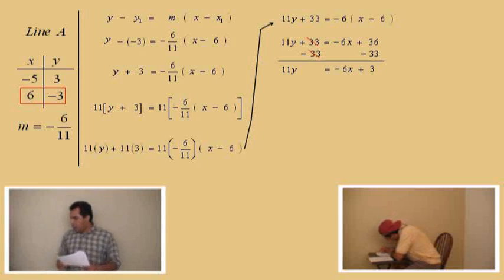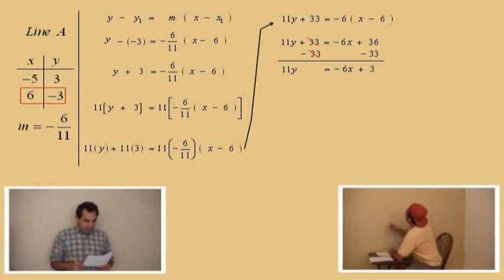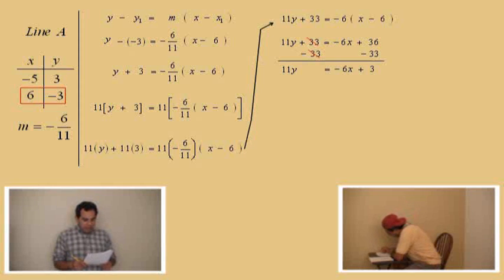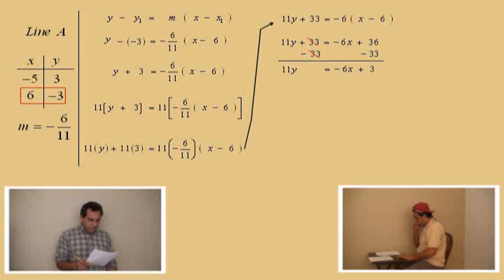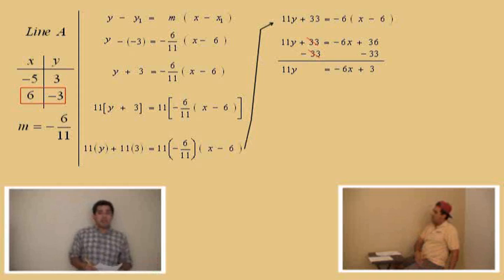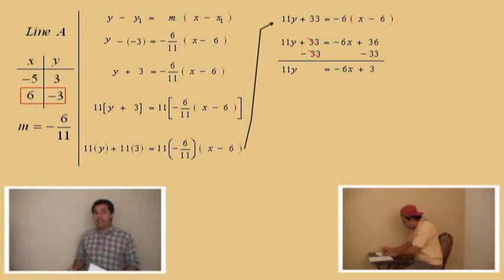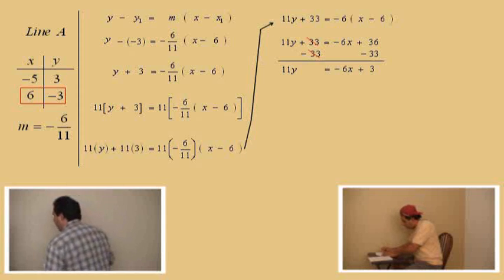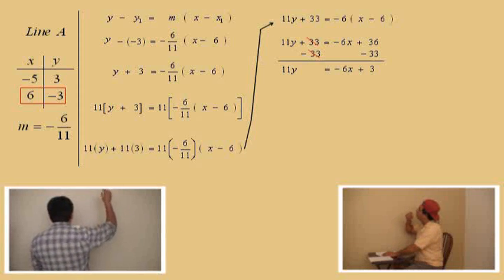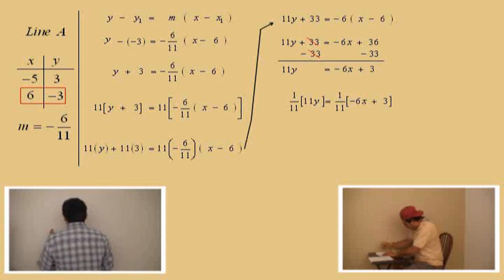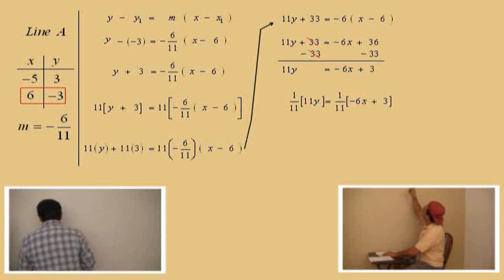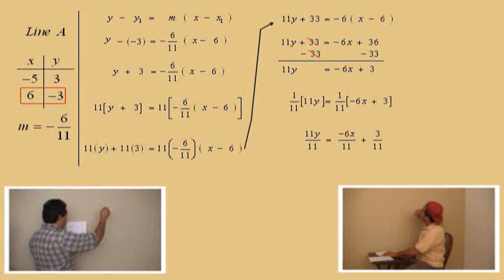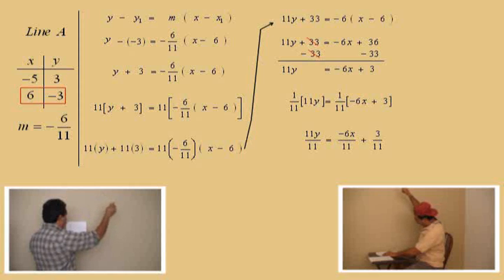Now, Charlie, here we have eleven y equals negative six x plus three. We're solving for y, so what do we have to do to both sides? Divide by eleven. Divide both sides by eleven. Dividing both sides by eleven is the same as multiplying both sides by one over eleven. So we distribute one over eleven to each term: eleven y over eleven equals negative six x over eleven plus three over eleven.